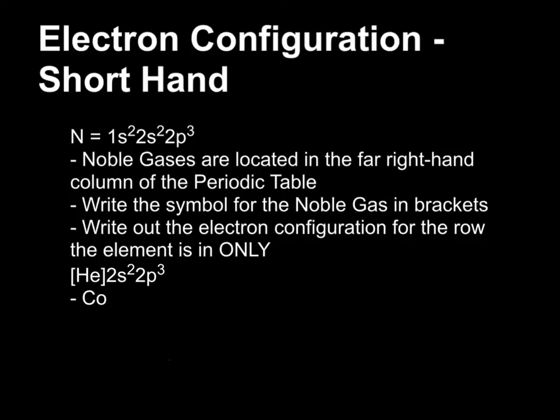What I want you to do now is try to write the shorthand electron configuration for cobalt. So pause the video and write the answer on a sheet of paper. Welcome back! Our shorthand electron configuration for cobalt is argon, 4s2, 3d7.